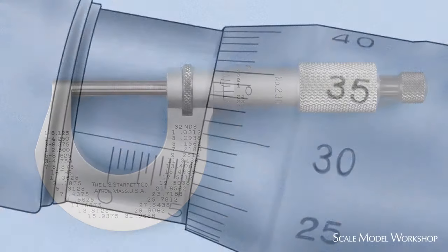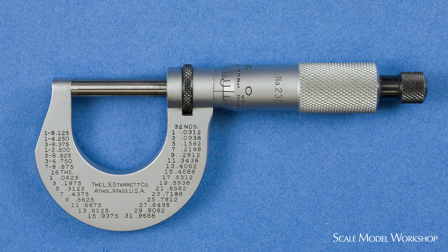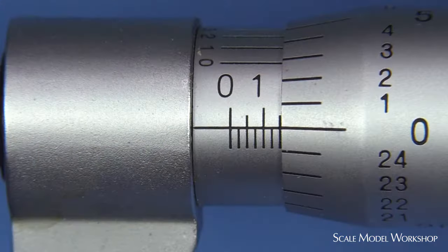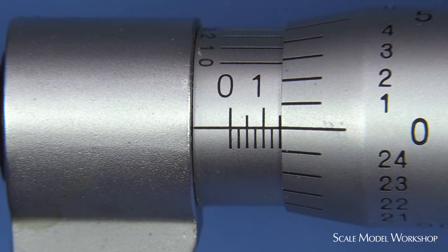The most common micrometer size used for modeling would no doubt be the one-inch or twenty-five millimeter micrometer, marked to read in thousandths of an inch or hundredths of a millimeter. These types of micrometers are marked with only two scales, the sleeve scale and the thimble scale.